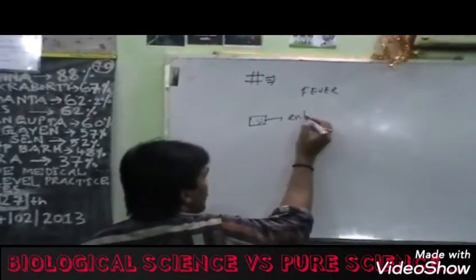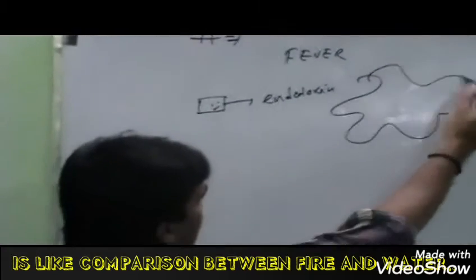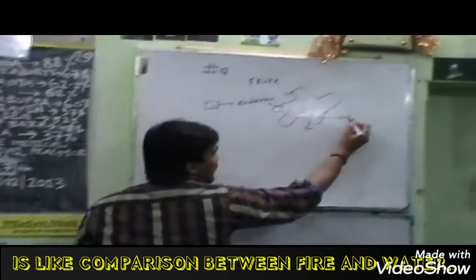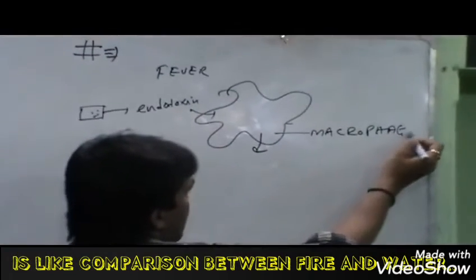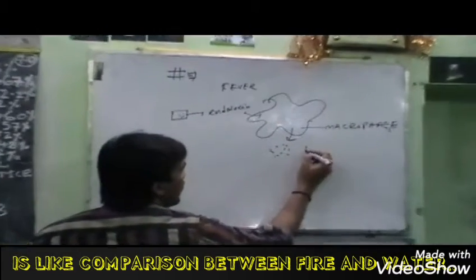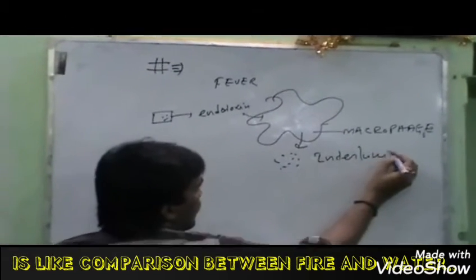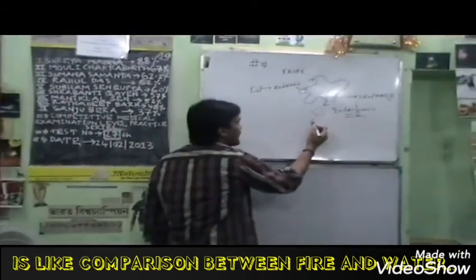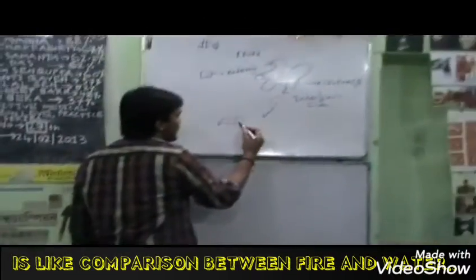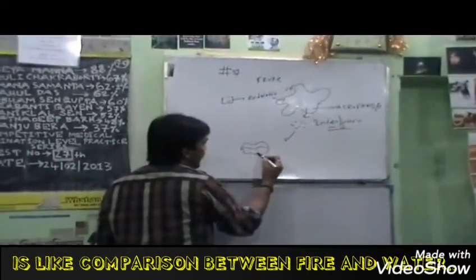We have talked about bacteria. Now, what is basically the macrophage? The macrophage produces interleukin 1. This is interleukin 1.